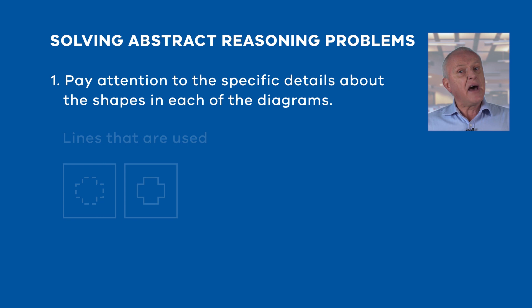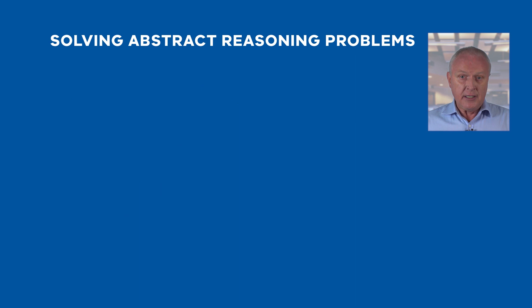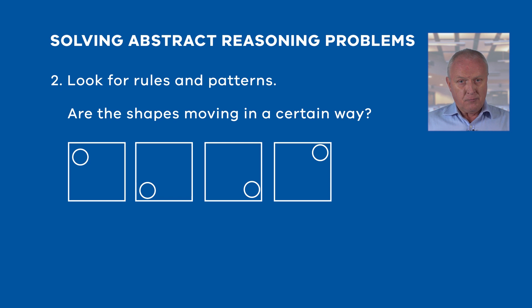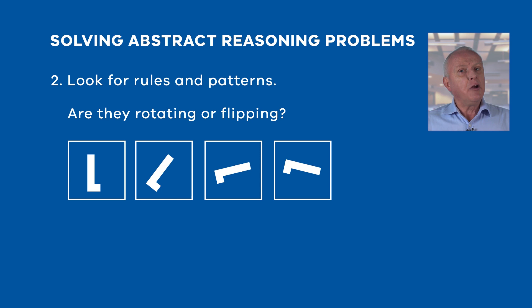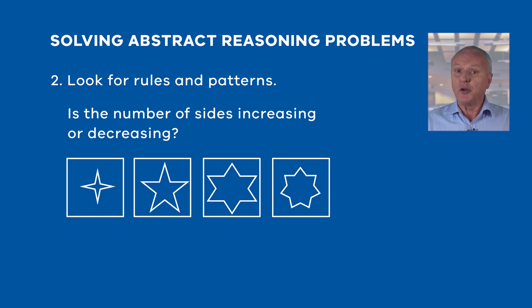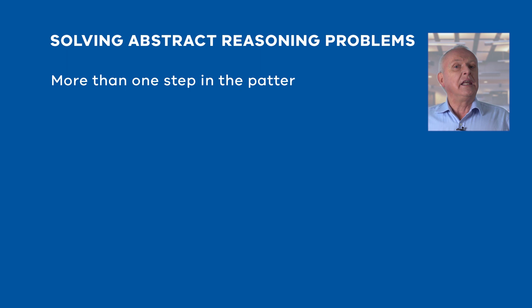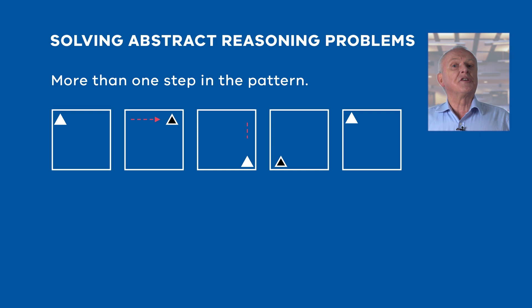Secondly, to answer abstract reasoning questions you'll need to look for rules and patterns. Ask yourself: are the shapes moving in a certain way? Are they being added to or taken away? Are they rotating or flipping? Is the number of sides increasing or decreasing? Are the shading or patterns in the shapes changing? Be aware that there may be more than one step in the pattern. For example, in this pattern the triangle is moving clockwise around the square and is also changing from black to white. A good strategy is to eliminate answers that are not following the pattern, which will narrow down your options.